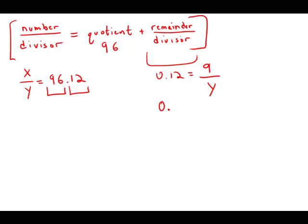Multiply both sides by y, and we get 0.12y equals 9. Divide both sides by 0.12, we get y equals 9 over 0.12.